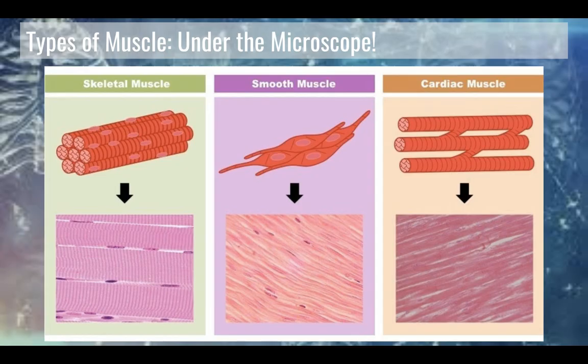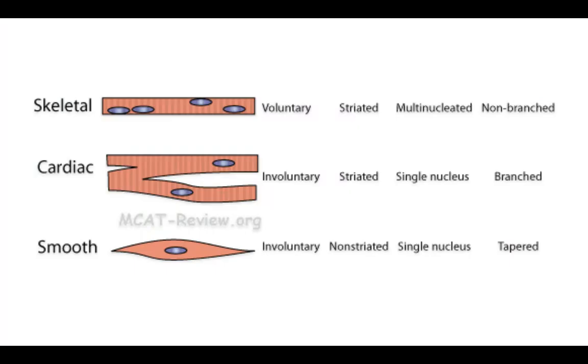Here's a summary. Skeletal muscle: lots of nuclei, it's voluntary, there are stripes, and it's not branched. Cardiac muscle: we do not have to think about our heart beating, there are still some stripes, usually just one nucleus per band, and it is branched so they're connected in a way. Smooth muscle: involuntary, there usually aren't any stripes, one nucleus per cell, and it tends to have this tapered look on the ends.